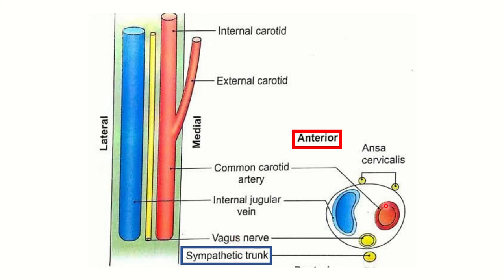Posteriorly within the carotid sheath we can see the vagus nerve. In the second picture, this side is the anterior position and this side is the posterior position. Within the carotid sheath the contents are the internal jugular vein, common carotid artery, and posteriorly the vagus nerve. Anterior to the carotid sheath is the ansa cervicalis, and posterior to the carotid sheath is the sympathetic trunk.